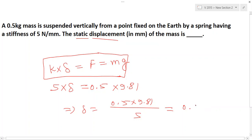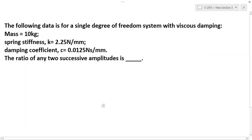The following data is for a single degree of freedom system with viscous damping: mass is given, spring stiffness is given, damping coefficient is given. The ratio of two successive amplitudes is what we're asking. From the logarithmic decrement, we know that δ = ln(x₁/x₂) = 2πξ / √(1 - ξ²).